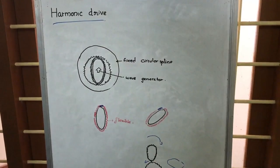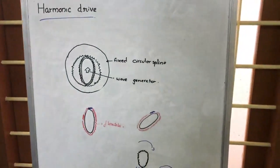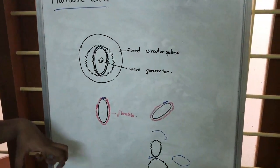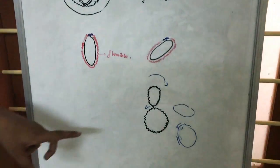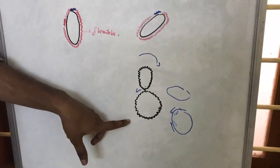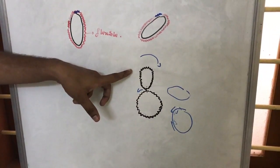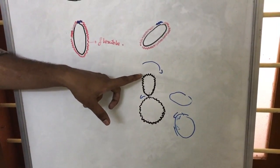So, harmonic drive. Before looking at the correct definition, first let us make an idea about this. Here we are having a circular gear meshed with an elliptical gear.